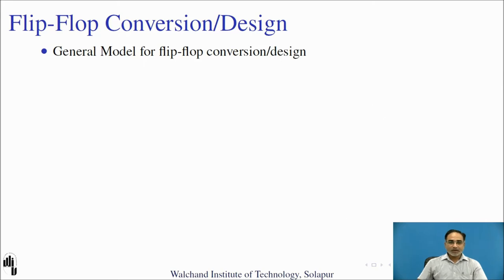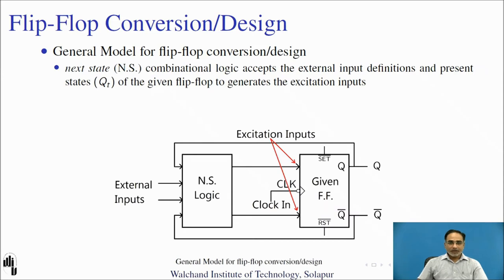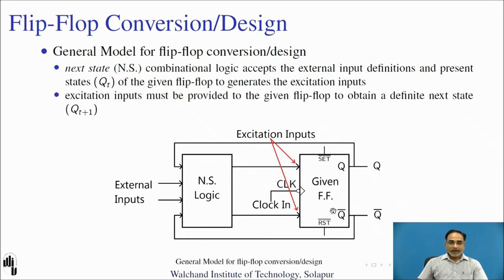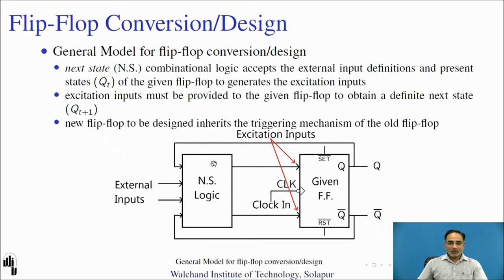Now let us revisit the general model for flip-flop conversion. Please pause the video and draw the general model. The next-state combinational logic accepts the external inputs and the present state of the given flip-flop. Here we are using a negative-triggered JK flip-flop, so excitation inputs must be applied to obtain the definite next state defined by the specifications. The PN flip-flop we are designing inherits the triggering mechanism of the given JK flip-flop, so we are designing a negative-edge-triggered PN flip-flop using a negative-edge-triggered JK flip-flop.